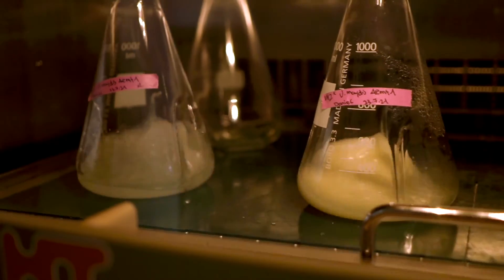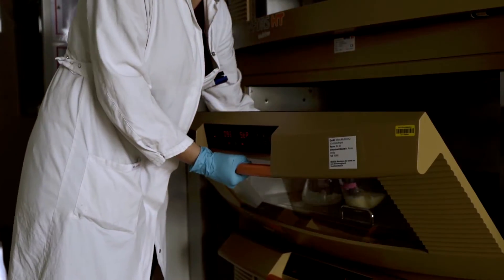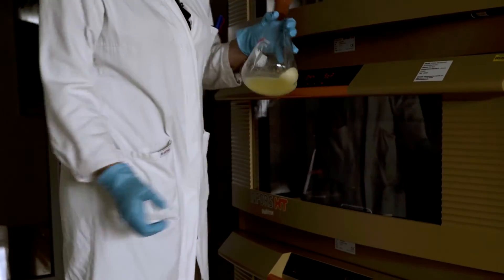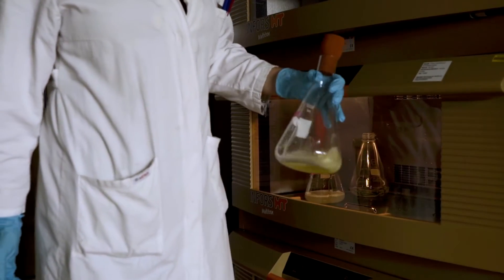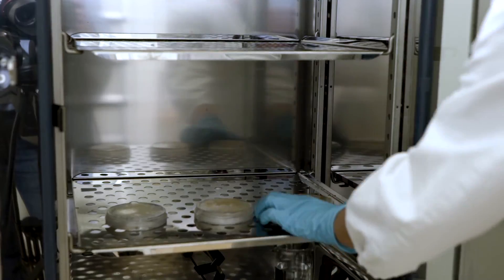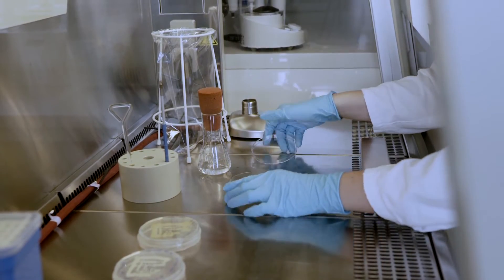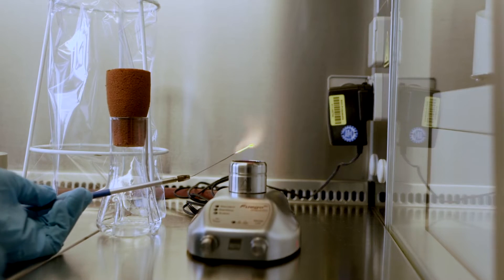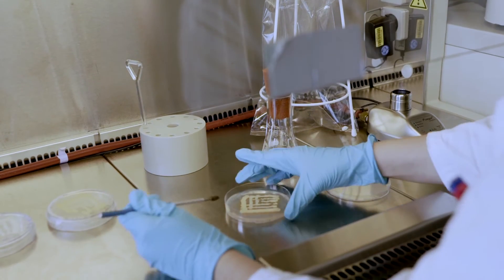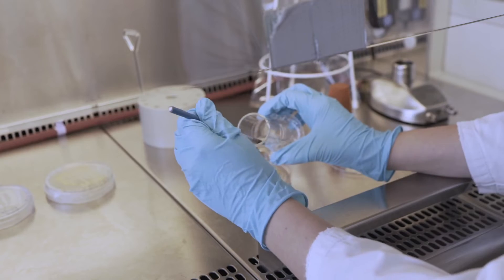At Fraunhofer IGB, we are focusing on how to further optimize the microbial production of biosurfactants. We focus on certain glycolipids like cellobios lipids and mannosylerythritol lipids, which we can produce from sugars and vegetable oils or biogenic residues.